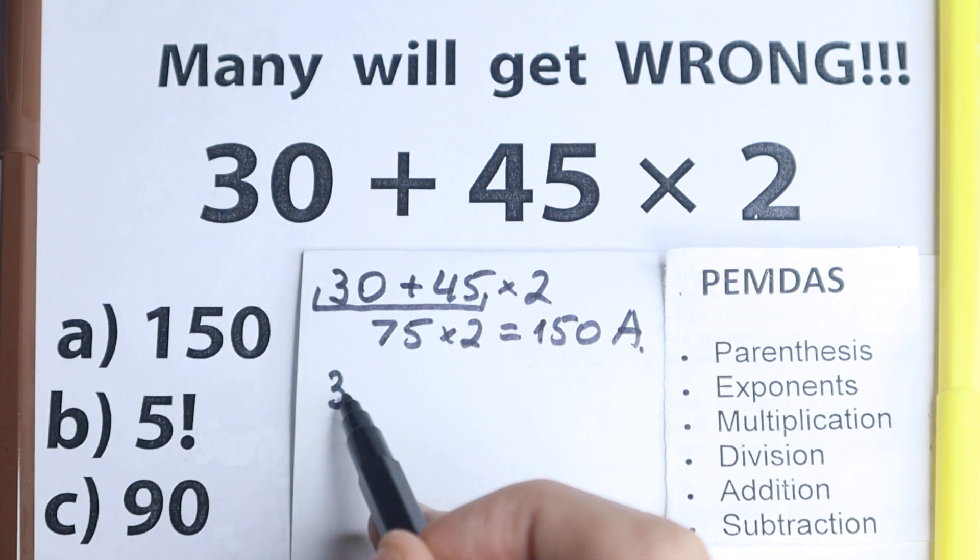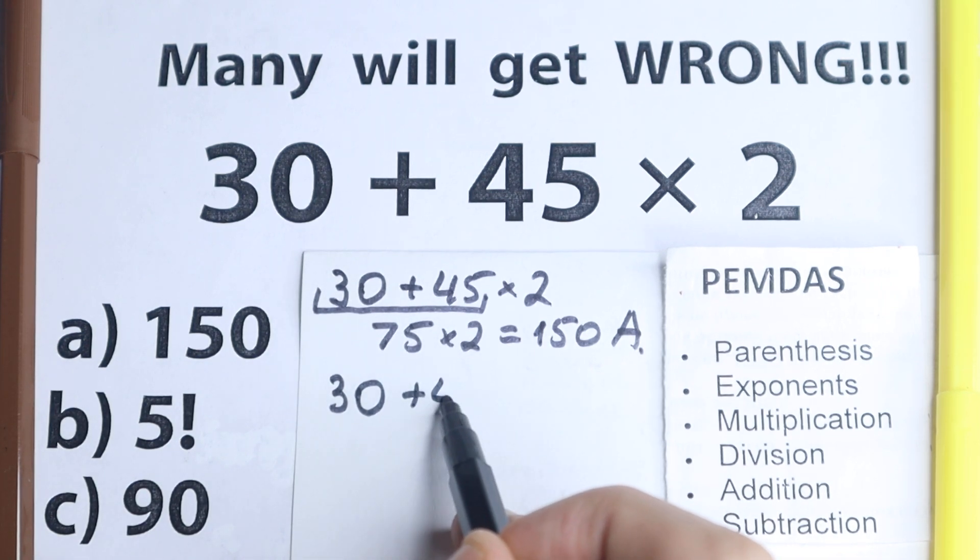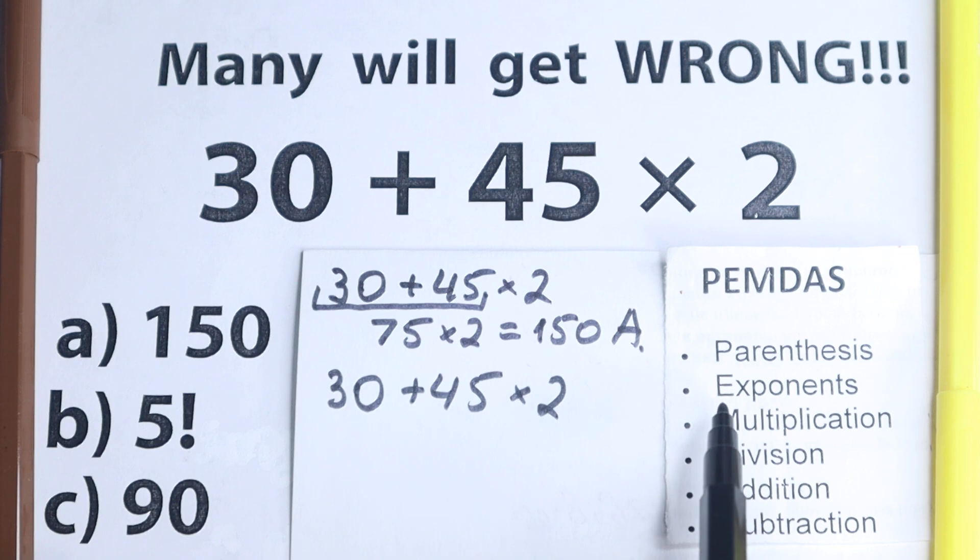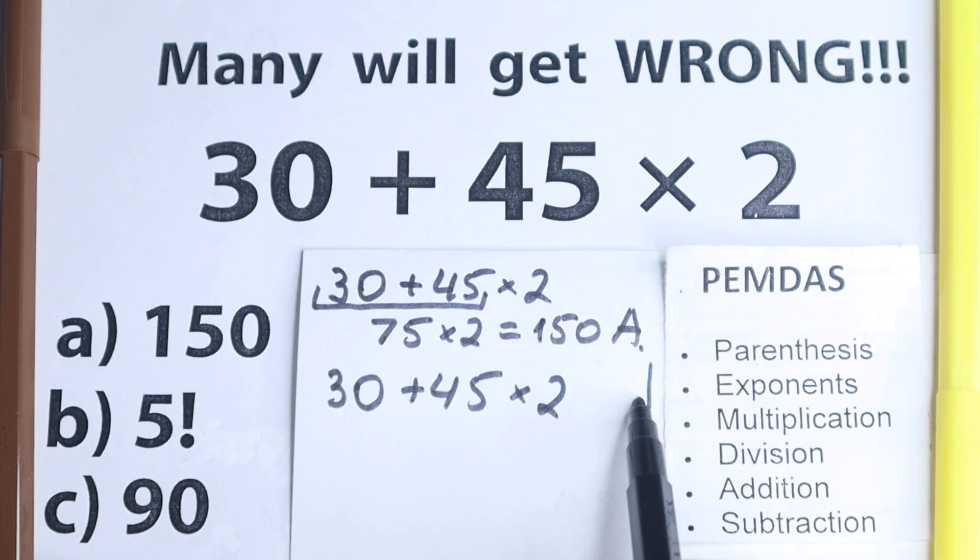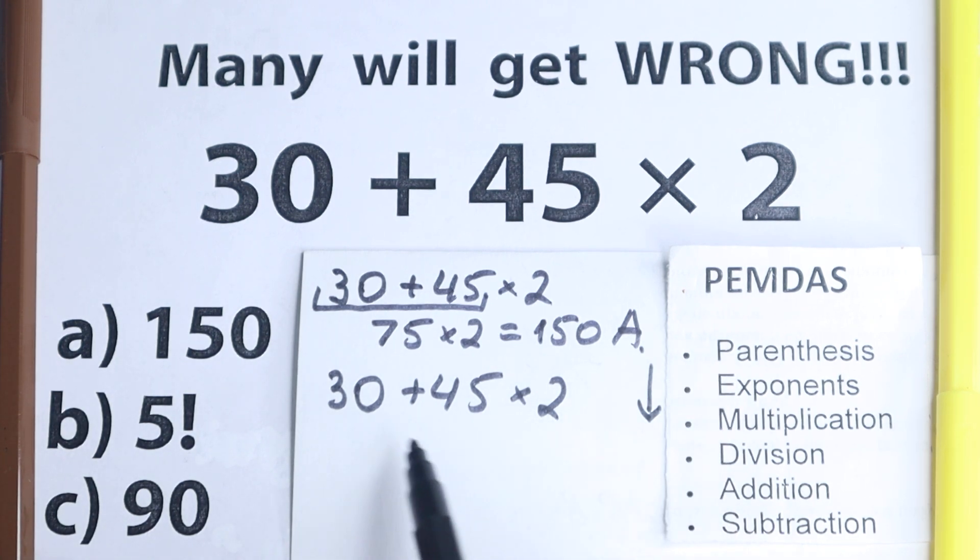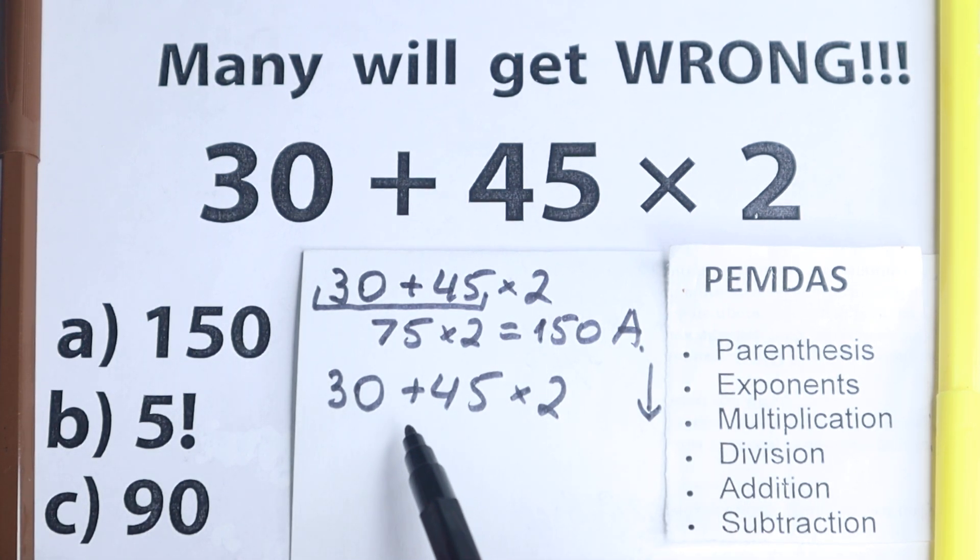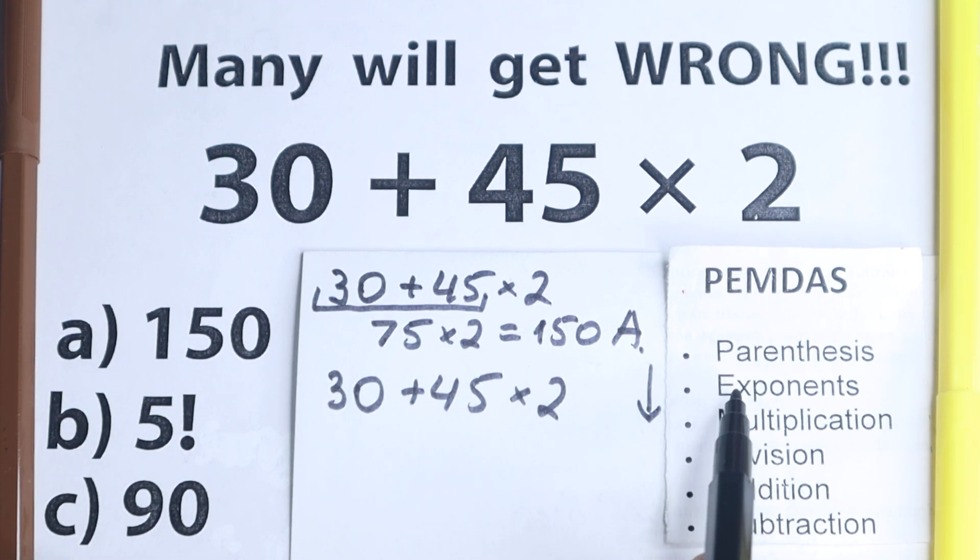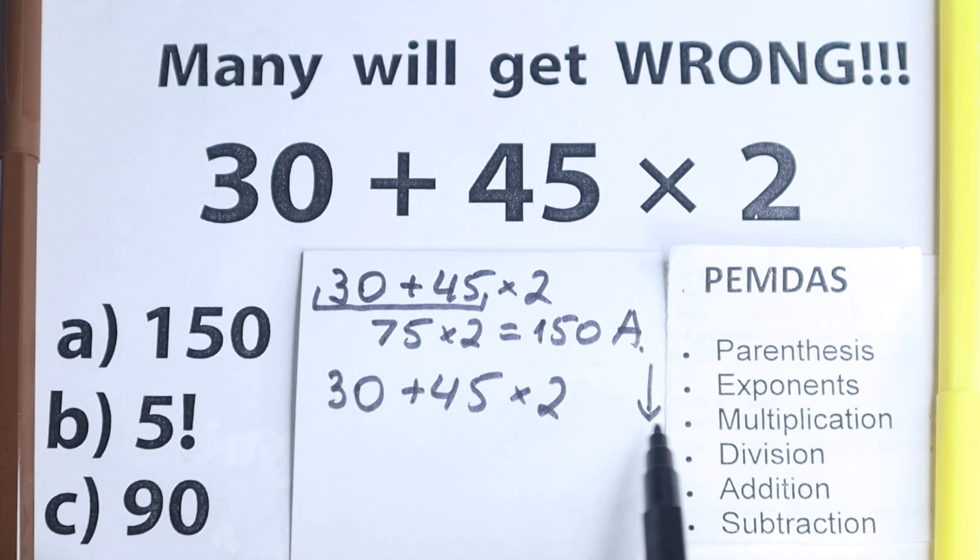I want to rewrite this problem real quick, so we have 30 plus 45 times 2. Let's look at this order. So what is the first step? This PEMDAS works from the top to the bottom. The first step according to PEMDAS: parentheses. Let's scan, are there any parentheses right here? No, I don't see any of those. We don't have any parentheses. What about exponents? Are there any exponents right here? No, I don't see any of those.